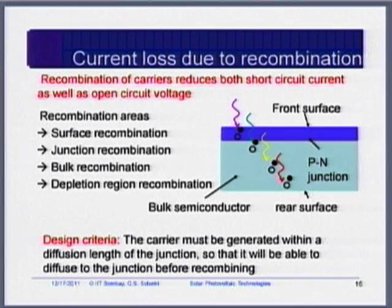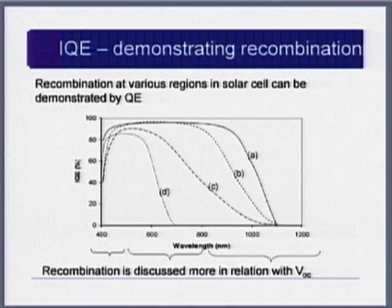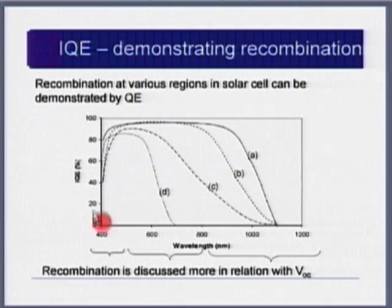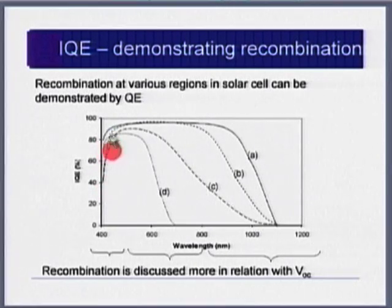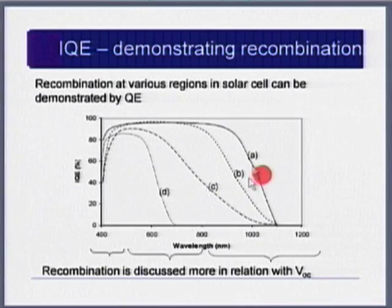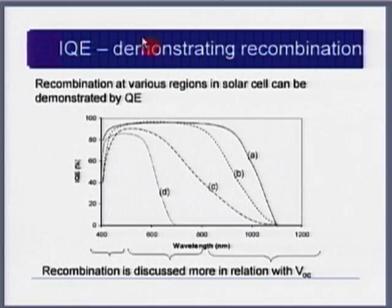High quantum efficiency at a given wavelength means less recombination; low quantum efficiency indicates high recombination at that location. The theoretical limit for short-circuit current is 46 mA/cm². In practice, commercially available crystalline silicon solar cells achieve about 30 to 38 mA/cm².